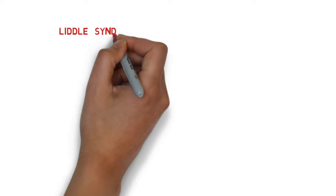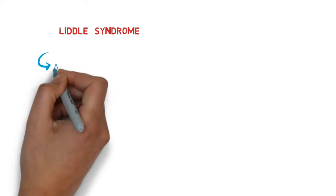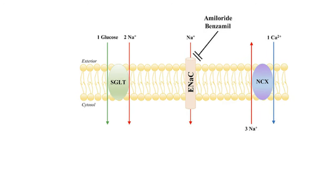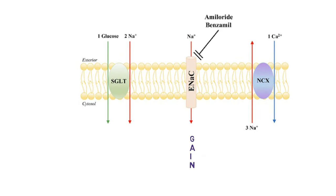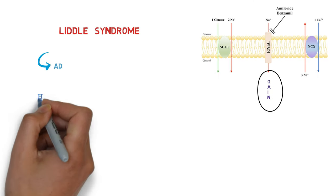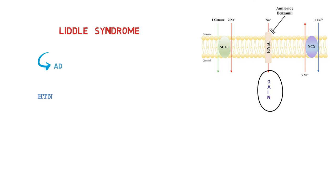There is another defect known as Liddle syndrome. It is an autosomal dominant disorder where there is gain of function of epithelial sodium channels, i.e. there is more reabsorption of sodium and water and hence child presents with hypertension and dehydration is absent.